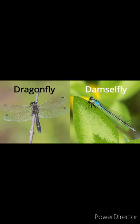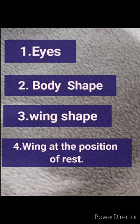Although the two look very similar, there are some marked differences between them. There are four points on the basis of which we can easily distinguish between the dragonfly and the damselfly. These points are: eyes, body shape, wing shape, and position of the wing at rest. We will discuss these one by one.